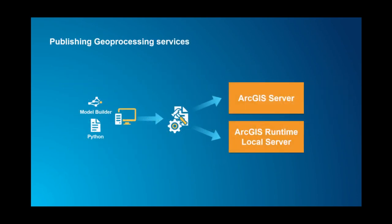When publishing services, the workflow is: use Model Builder or Python in ArcGIS Desktop, create a geoprocessing package or service definition, then publish that service either as an ArcGIS Server geoprocessing service or as a geoprocessing package for use with the ArcGIS Runtime Local Server.